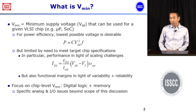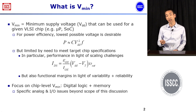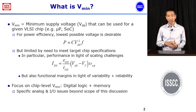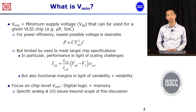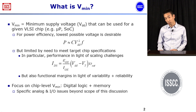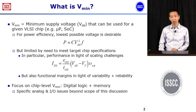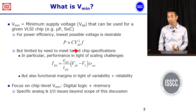Let's start with a little definition here, because Vmin is a term that's been used for a lot of different things. In this context, we're going to assume that Vmin is the minimum supply voltage that can be used for a given VLSI chip. We're going to want to use the lowest possible voltage we can, and that's because power is a quadratic function of voltage.